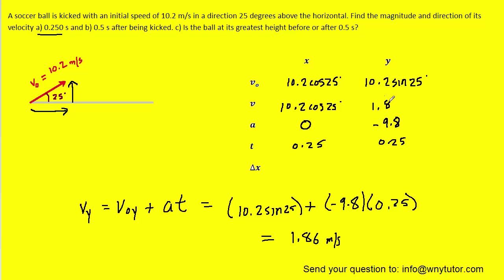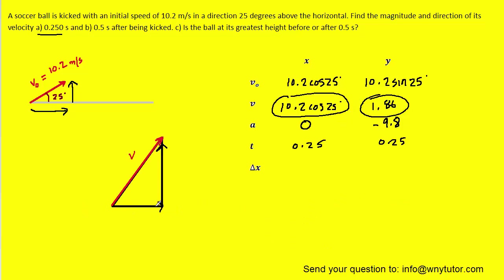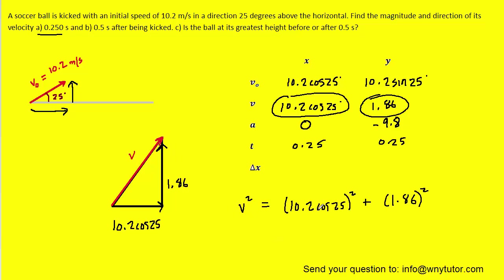The question wants the overall final velocity. We have a component in the x direction and a component in the y direction. Let's take those components and draw a triangle. In the x direction, the final velocity is 10.2 cos 25, and in the y direction it's 1.86. Since both are positive, x points rightward and y points upward. We use the Pythagorean theorem to find the magnitude, which works out to roughly 9.43 meters per second.